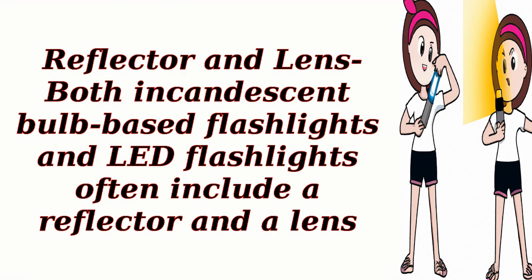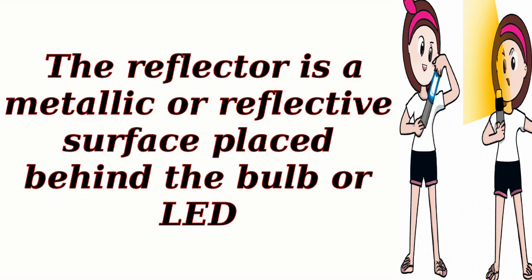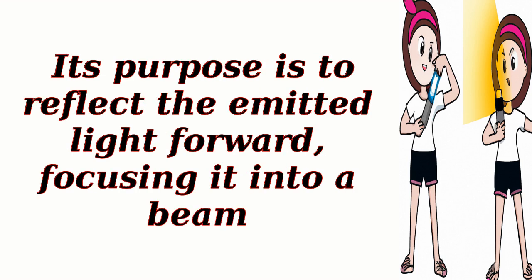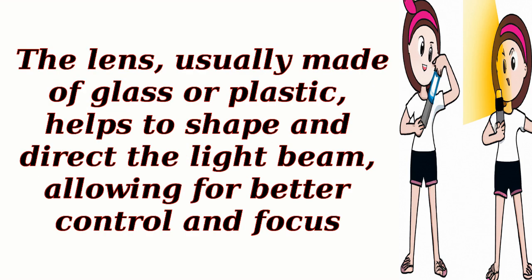Reflector and lens: both incandescent bulb-based flashlights and LED flashlights often include a reflector and a lens. The reflector is a metallic or reflective surface placed behind the bulb or LED. Its purpose is to reflect the emitted light forward, focusing it into a beam. The lens, usually made of glass or plastic, helps to shape and direct the light beam, allowing for better control and focus.